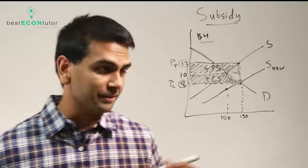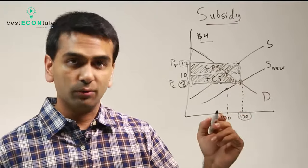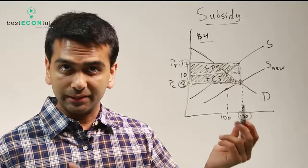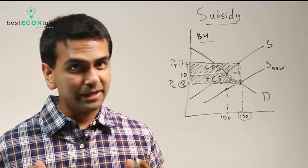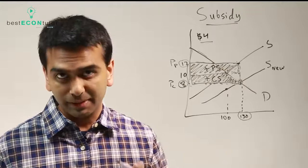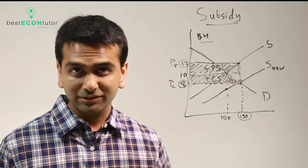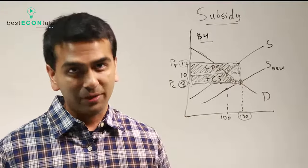One final thing to notice about the subsidy is the new quantity in the market is higher than before. It went from 100 up to 130 in this case. For every other type of government intervention—whether it was a ceiling, a floor, a quota, or a tax—the quantity was lowered by the government intervention. But the subsidy is the only case where government intervention raises the quantity, yet there's still a deadweight loss.